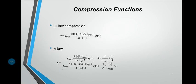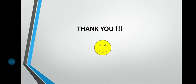Moving on to the next topic, we have baseband signaling. But first, let us quickly recap what we have studied: pulse code modulated signals, how quantization is done, uniform and non-uniform quantization, quantizer characteristics, and the two types of compression — mu-law and A-law compression. Hope you all enjoyed. Thank you.